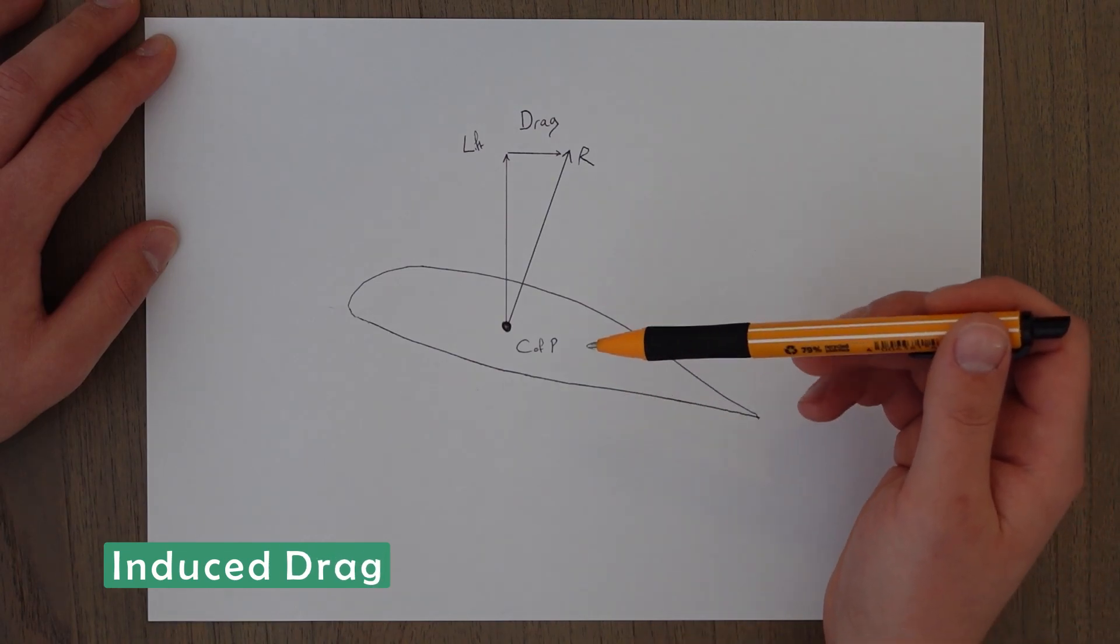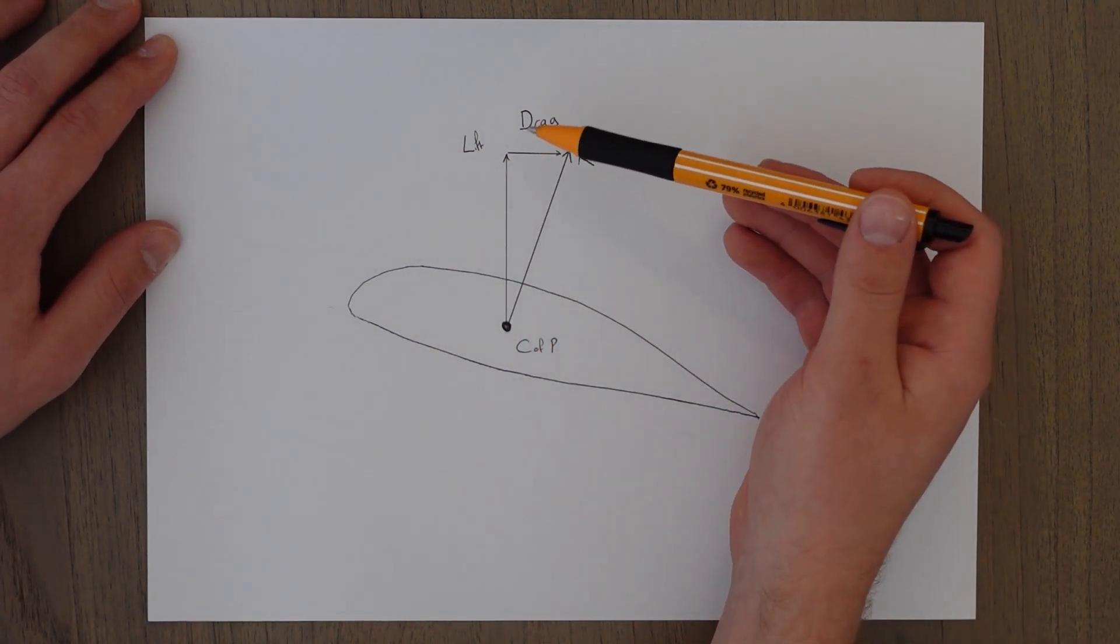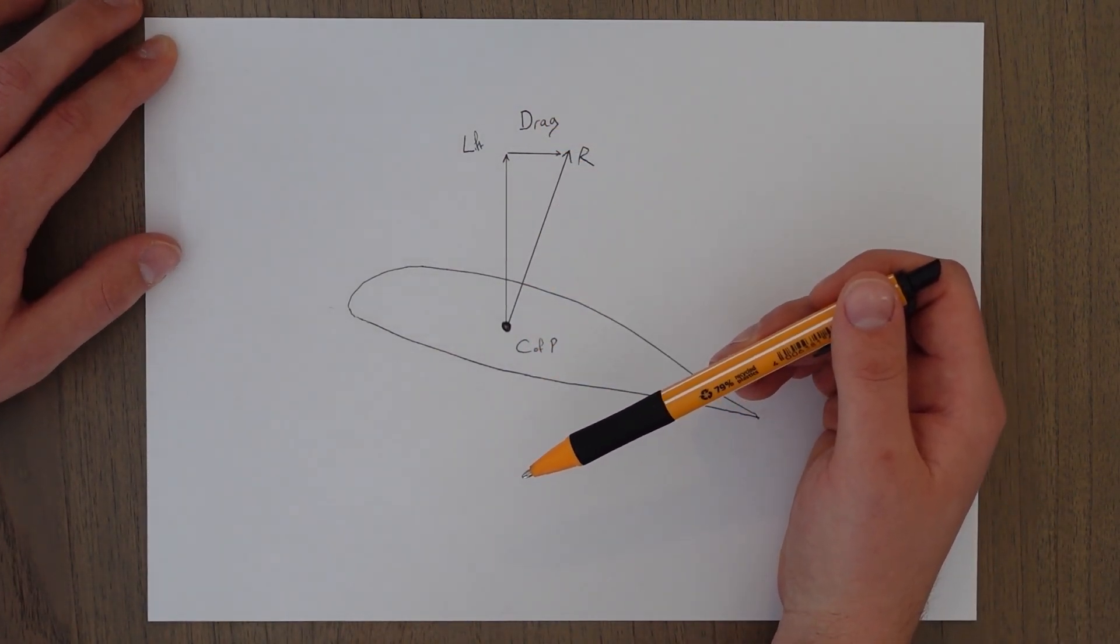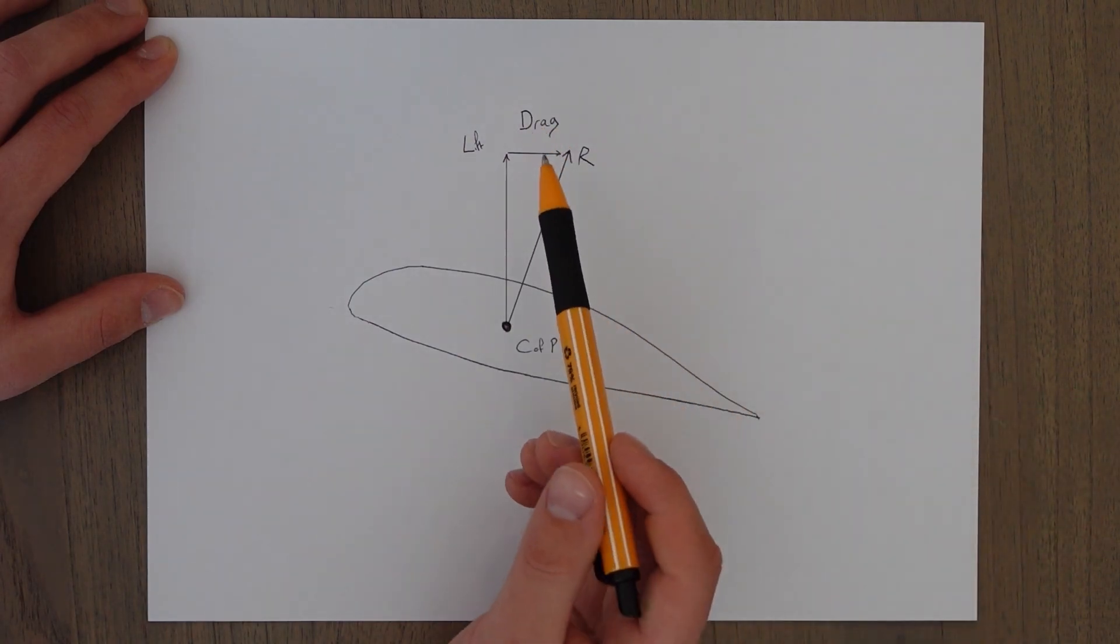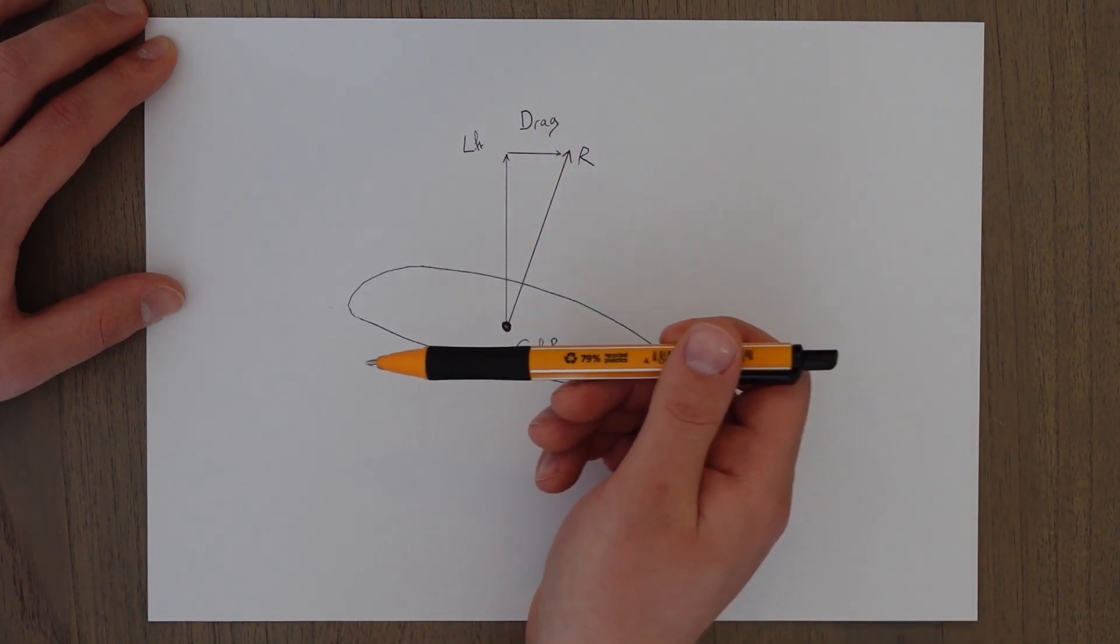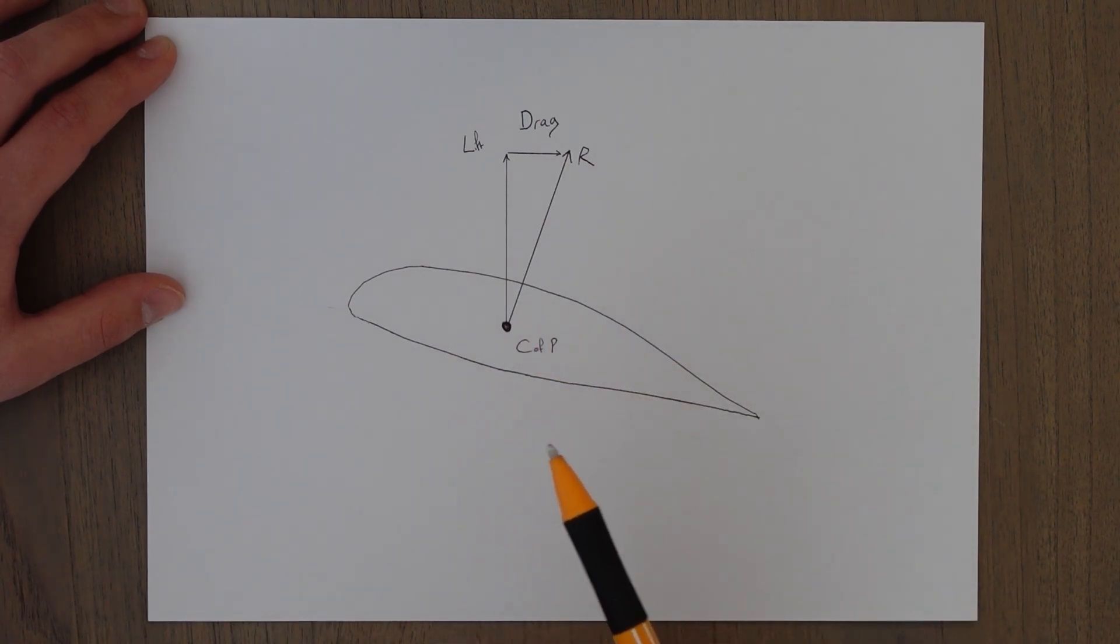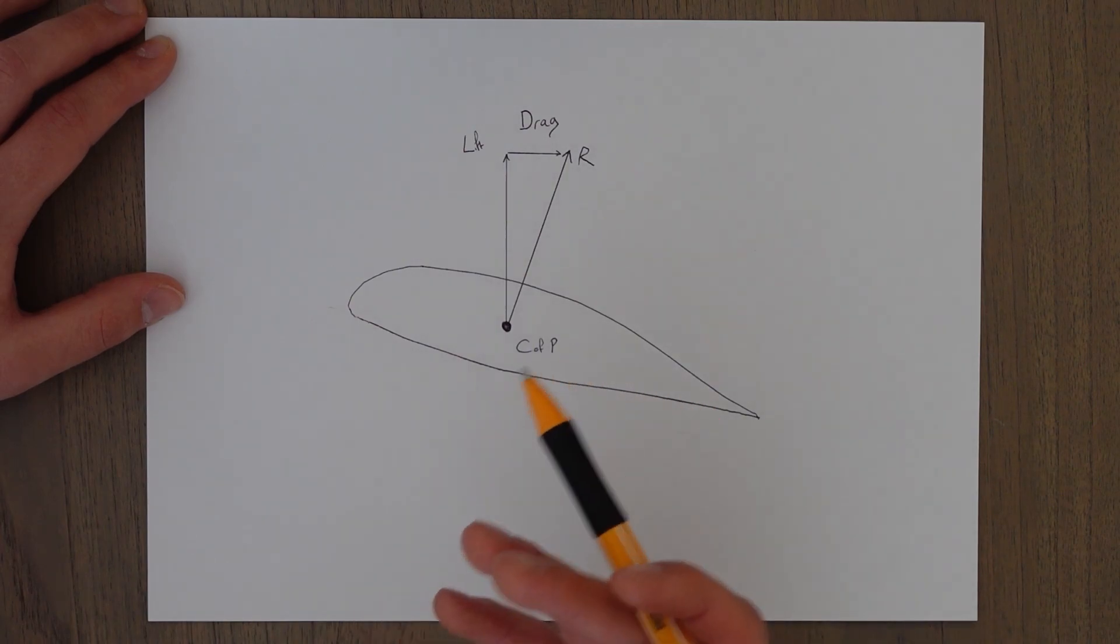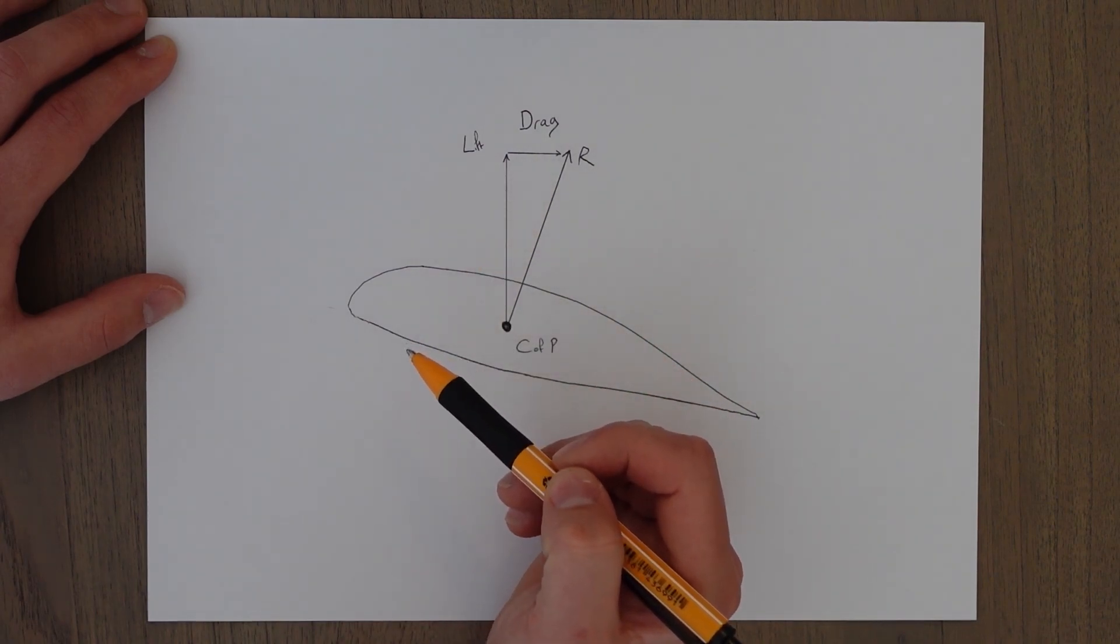In the last class we looked at the upward component of our resultant aerodynamic force. That was lift and it directly opposes the weight of the aircraft. Induced drag is the other part of this resultant aerodynamic force. It's the part that opposes our direction of travel. It's called induced drag because it only exists when lift is being generated. Induced drag is also added to by vortexes, but for now just think of it as the second component to our resultant force, the horizontal resultant force.